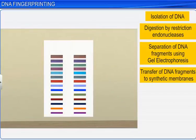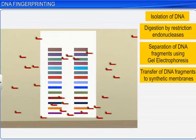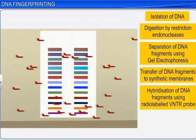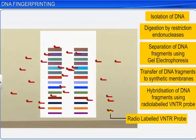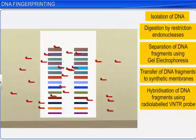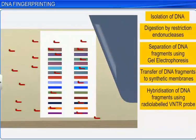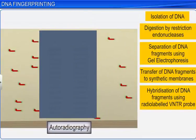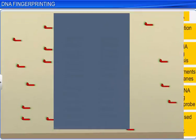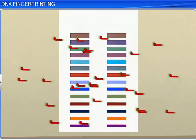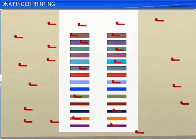This step is followed by the hybridization of the DNA fragments using a radio-labeled VNTR probe. Finally, the hybridized DNA fragments are detected by a technique called autoradiography, conducted using an X-ray film. Hybridization with the VNTR probe results in an autoradiogram which produces several bands of different sizes.